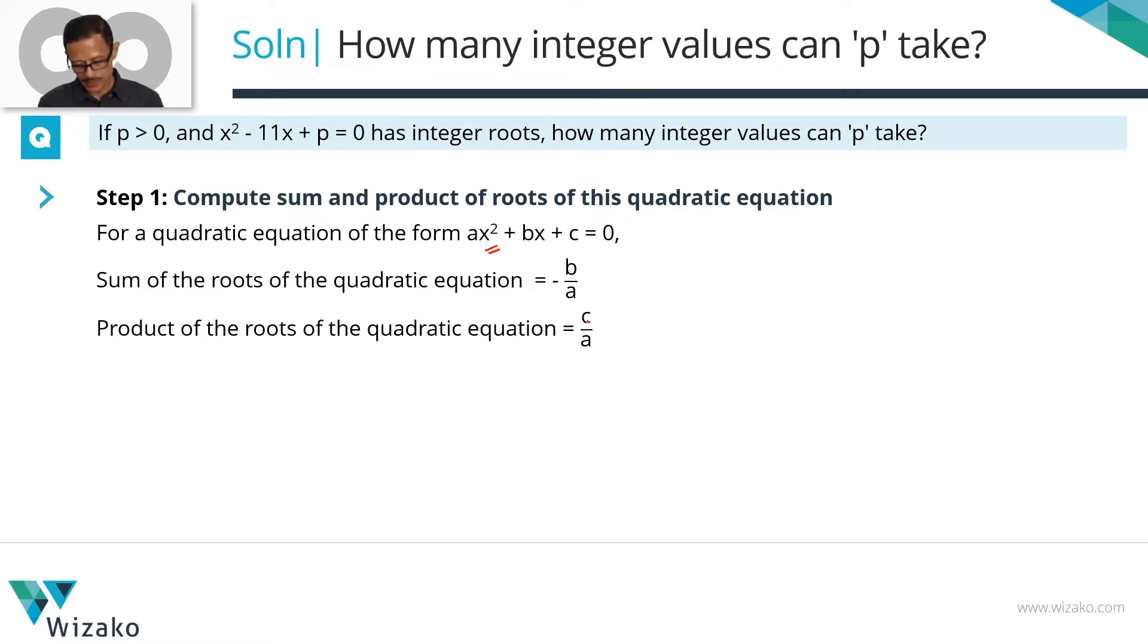In our example, a equals 1, the coefficient of x² is 1, b equals -11 and c equals p. So sum of the roots, let's say the roots are alpha and beta. So alpha + beta equals -(-11) divided by a, which is equal to 11.